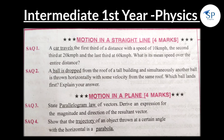For 4-mark questions, we have problems from various lessons. First, Motion in a Straight Line — for 4 marks we have to choose problems. Two very important problems: first, a car travels the first third of a distance with a speed of 10 km/h. Second, a ball is dropped from the roof of a tall building and simultaneously another ball is thrown horizontally.